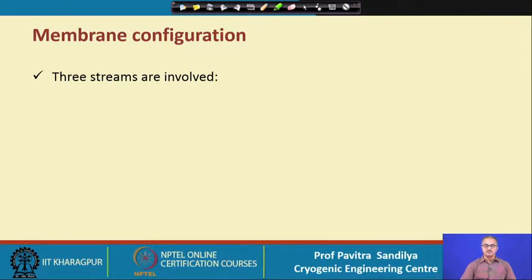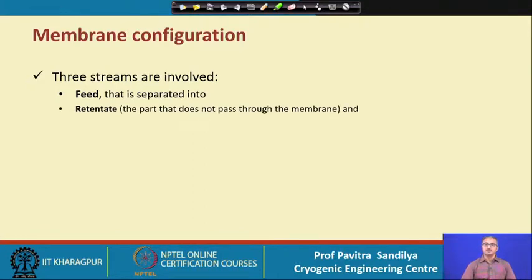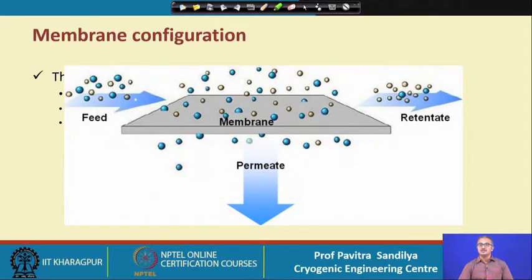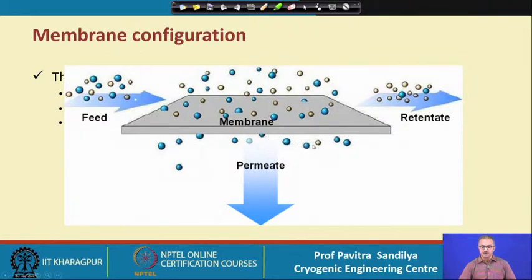Let us look at a typical membrane configuration. We have three streams: the feed, the retentate — which is the part of the feed mixture retained by the membrane — and the permeate, which is the part that passes through the membrane. In the pictorial representation, the feed (shown as circles of various colors) passes over the membrane; some components permeate through, while the rest are retained as the retentate.